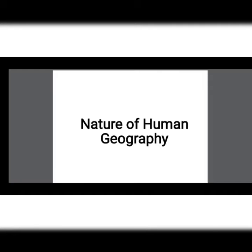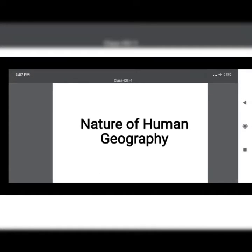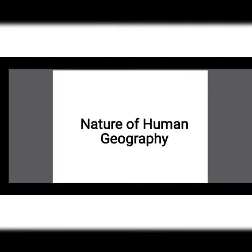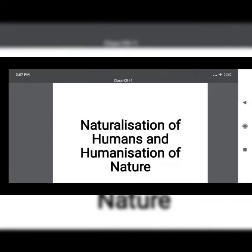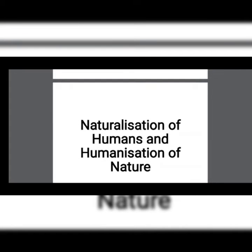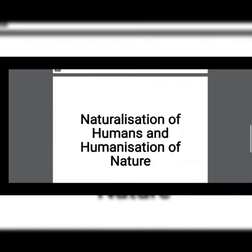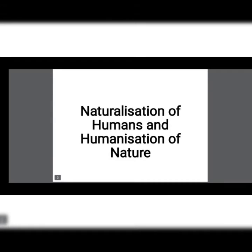Elements of material culture have been created by human beings using resources provided by the physical environment. The next topic is the naturalization of humans and the humanization of nature. Human beings interact with their physical environment with the help of technology, which indicates the level of cultural development of a society.